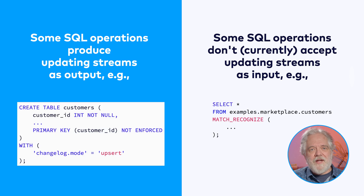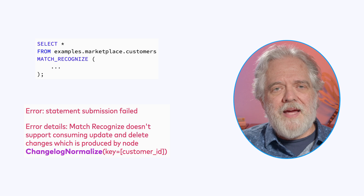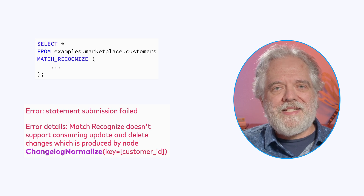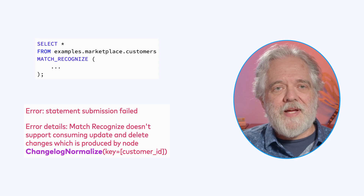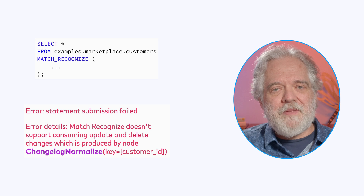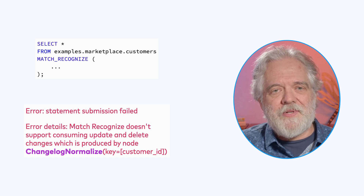So this is why the Flink SQL planner currently can't handle this particular match recognize query — its input table is an upsert table, and match recognize doesn't accept update streams. And what's this changelog normalize mentioned in the error message? Changelog normalization is the process of transforming an upsert stream to a retract stream. This is something that the Flink SQL runtime does internally whenever it ingests an upserting stream. It's an implementation detail that has found its way into the error message, but it's not particularly important.